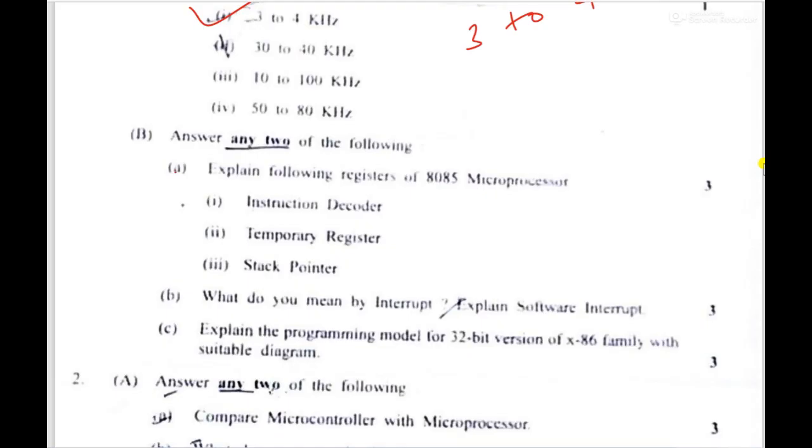So the second question number B explain following registers. So instruction decoder, temporary register, stack pointer. As like general purpose registers of 8085 the MCQ was asked. As like that only the same temporary registers then some data instruction registers.